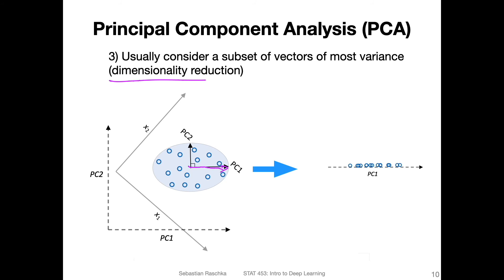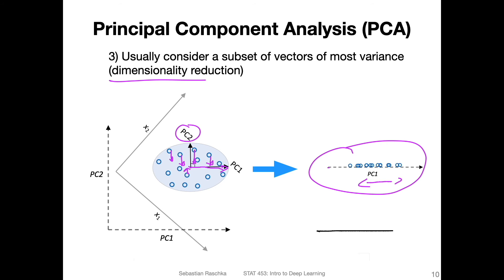We keep the first eigenvector and ignore the second. If you remove the PC2 dimension, you are squishing the data down into one dimension. This is how it would look if you project the data onto just one dimension — the principal component where variance is most spread. If you did the same with PC2, the data would be less spread and more concentrated in the center with a lot of overlap. In a real-world case, we would reduce hundreds or thousands of features to a smaller dimensional space.